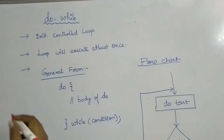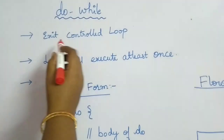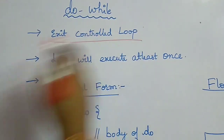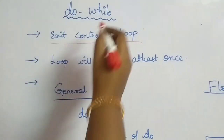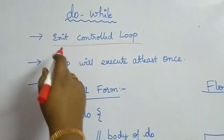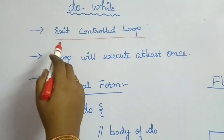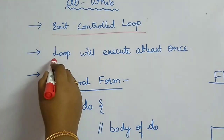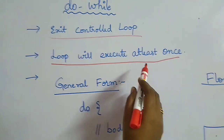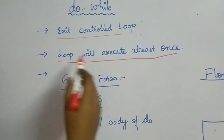As we saw in the previous session, there are two kinds of loops: entry control and exit control. Do-while is an exit control loop — and it is the only exit control loop in Java. This means the loop will be executed at least once, irrespective of whether the condition is true or false.